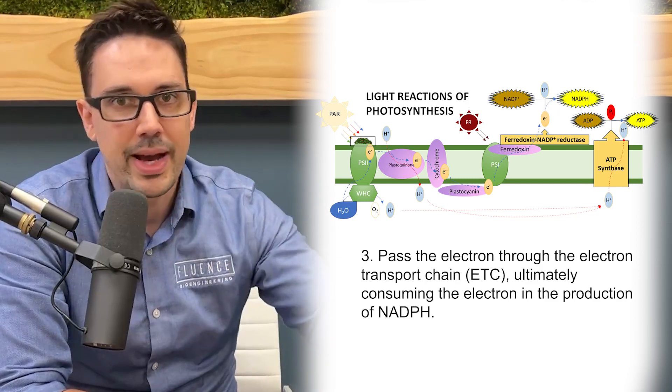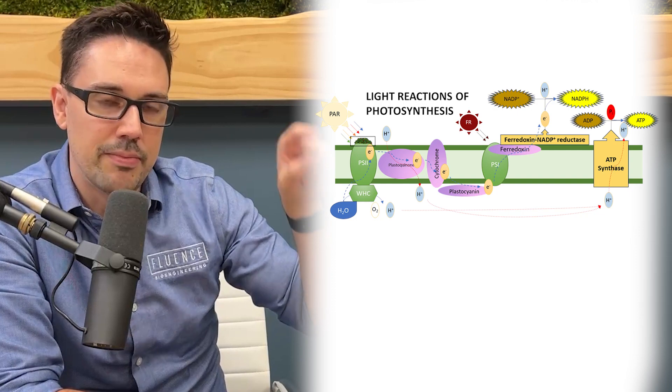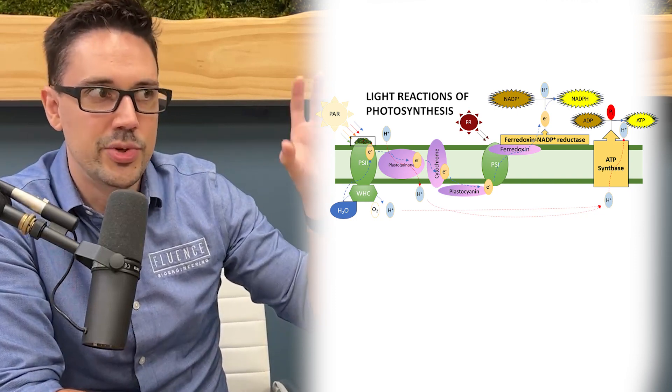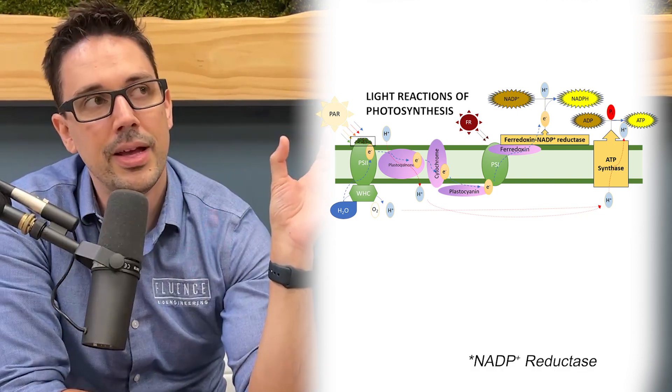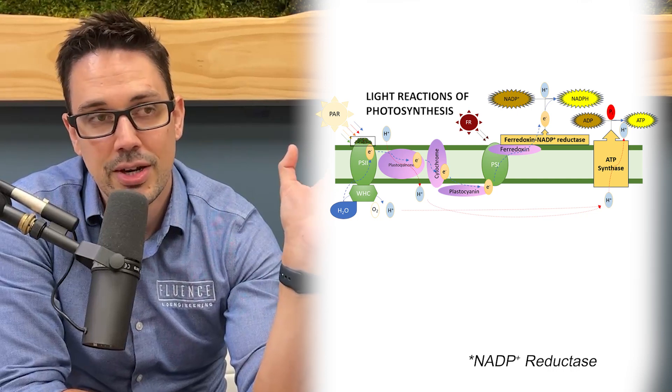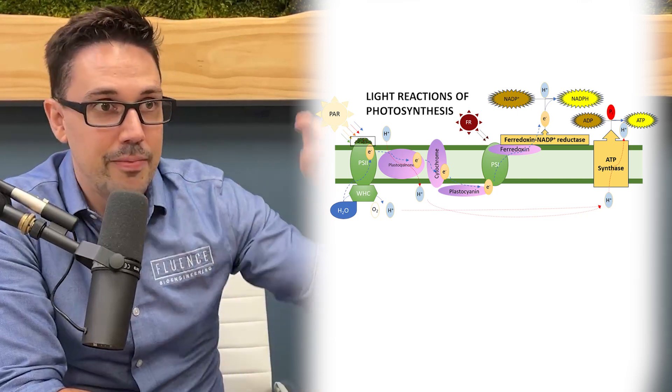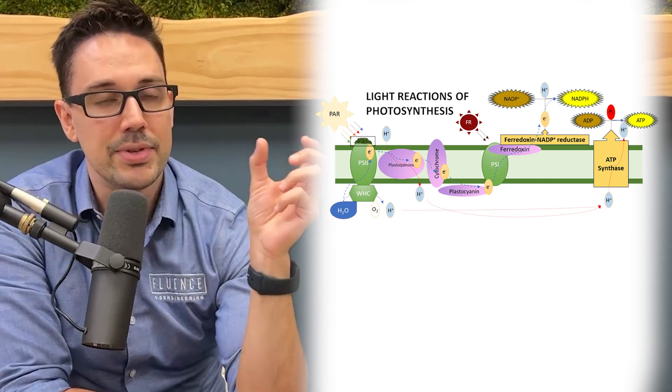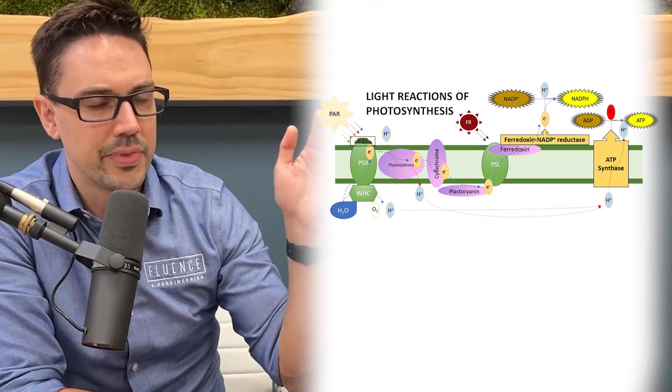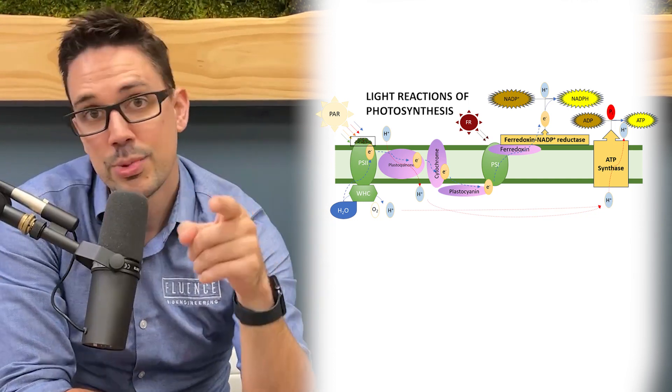If we go back to where the electron is being passed through Photosystem I to ferredoxin NADP reductase, that biochemical step is a bottleneck. It's slow compared to everything else. And that's where far-red comes in.